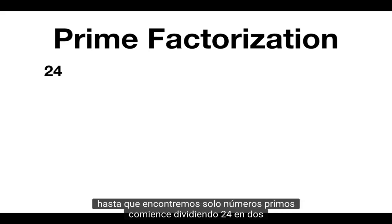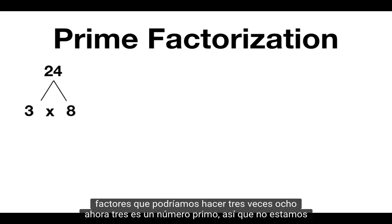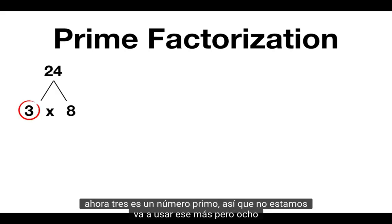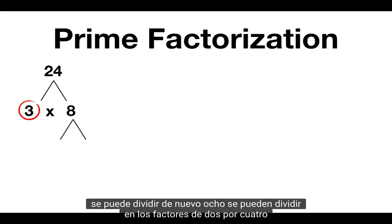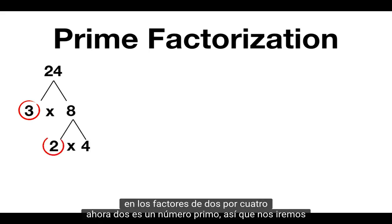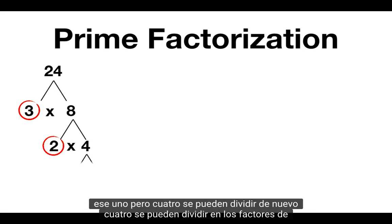We start by splitting 24 up into two factors. We could do 3 times 8. Now 3 is a prime number, so we're not going to use that one anymore, but 8 can be split up again. 8 can be split into the factors of 2 times 4. Now 2 is a prime number, so we'll leave that one, but 4 can be split up again.